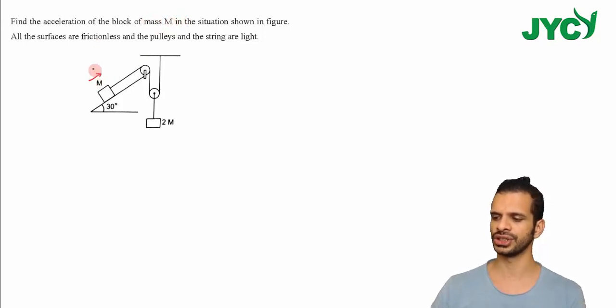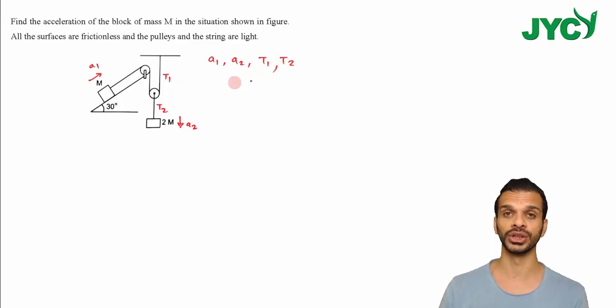Let's consider this acceleration is A1 and this is A2. The tension in this string is T1 and the tension in this string is T2. So there are 4 unknowns: A1, A2, T1, and T2. I need 4 equations to solve these 4 unknowns or to get the values of these 4 unknowns.